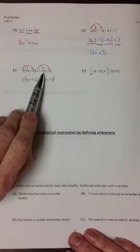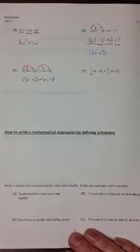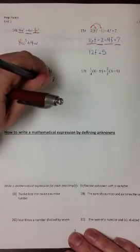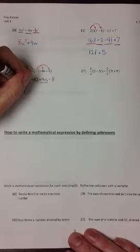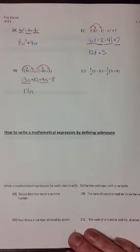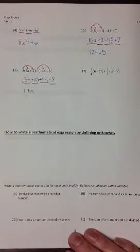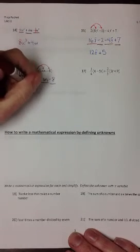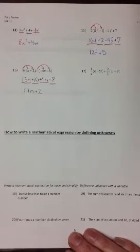So those terms didn't change other than having their signs reverse. To combine terms that are alike, the 13n and 4n will give us a total of 17n, and combining the constants, positive 10, negative 8, leaves us with a final positive 2.